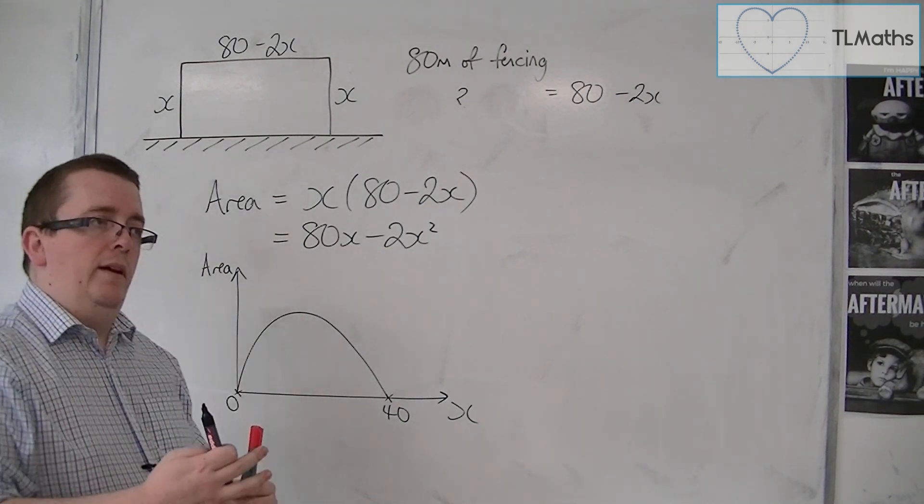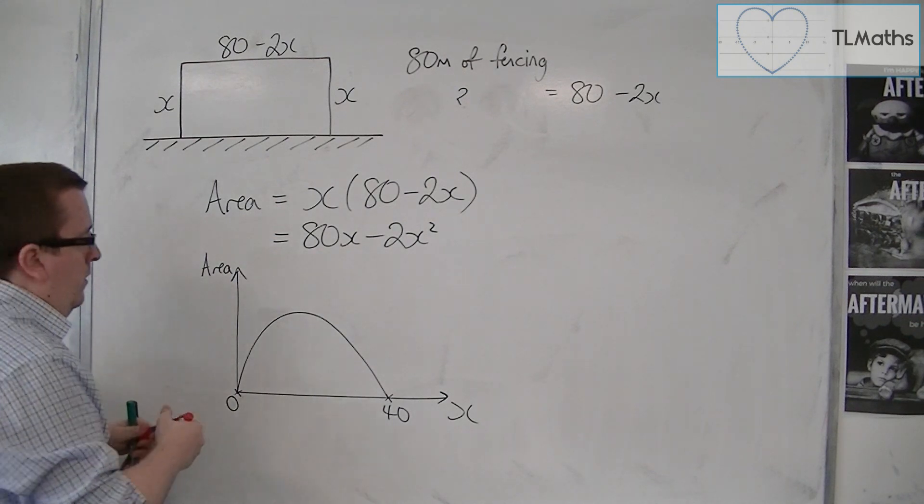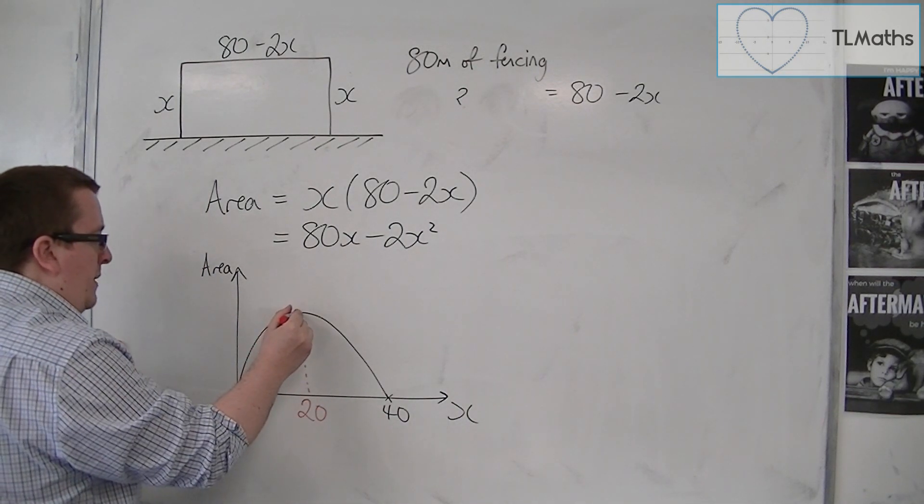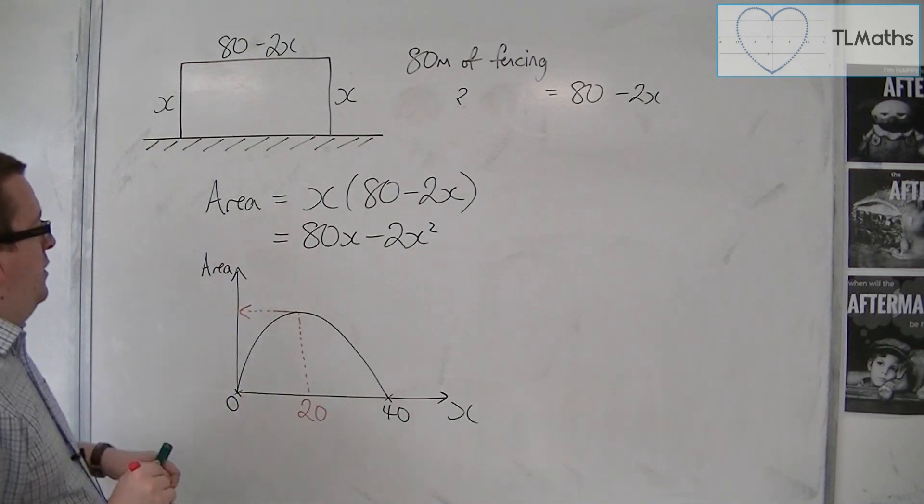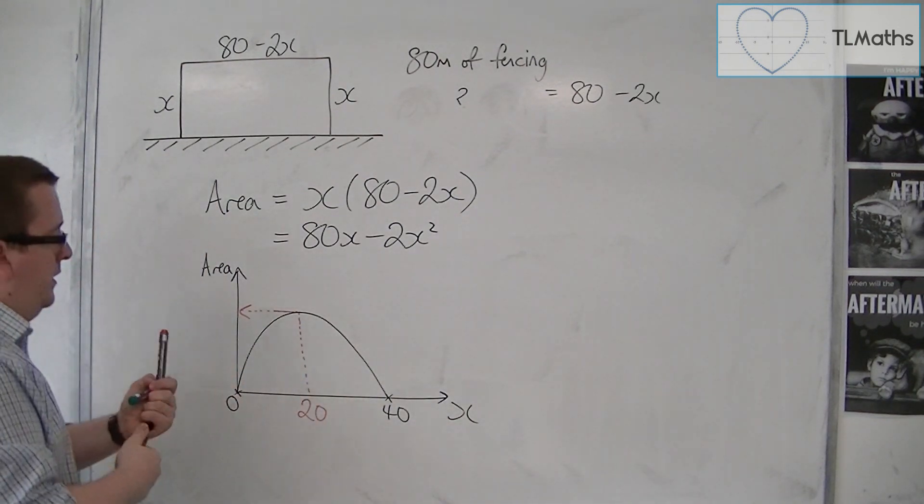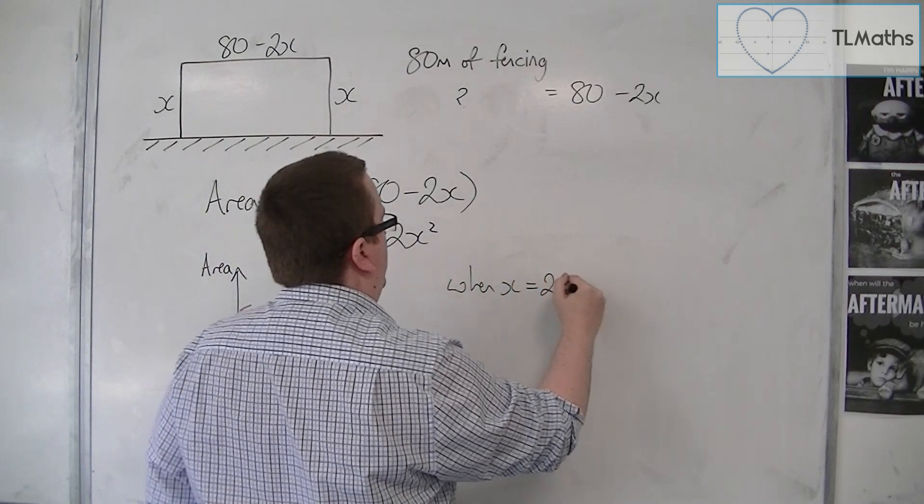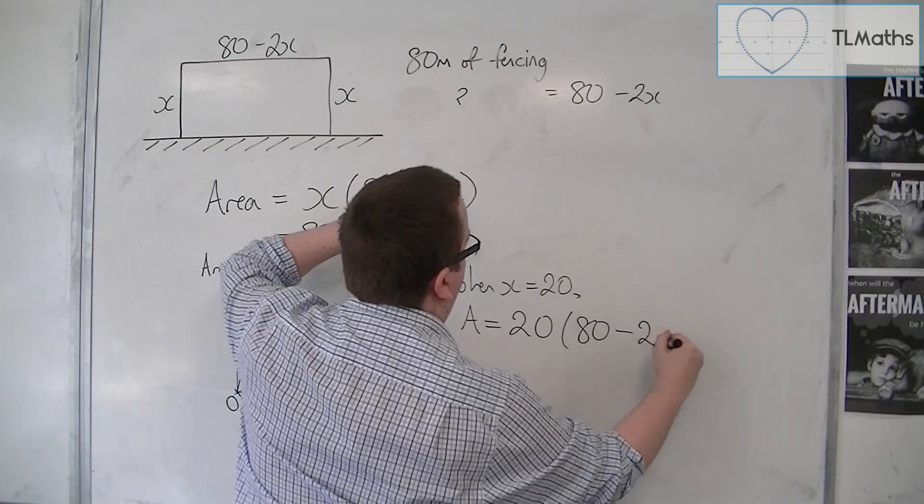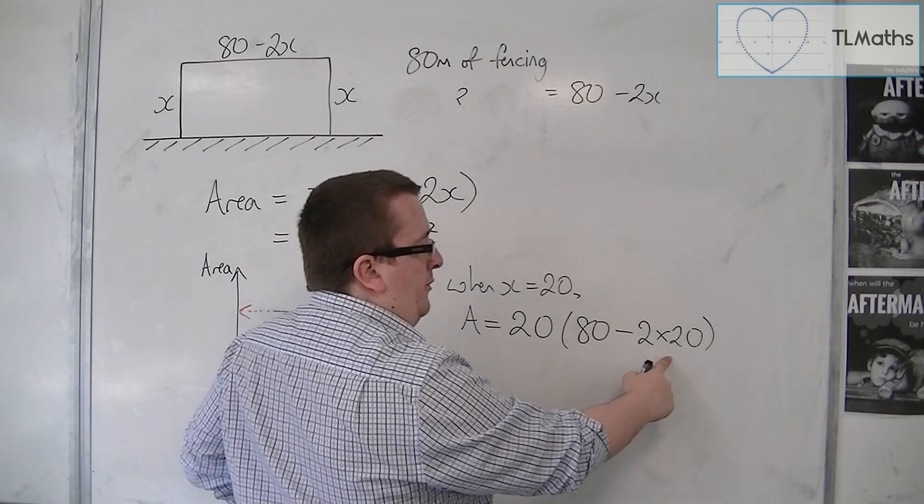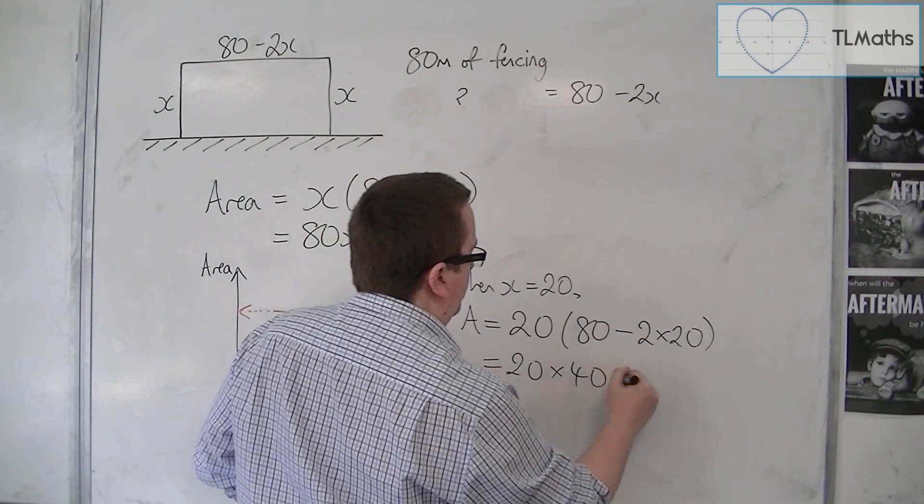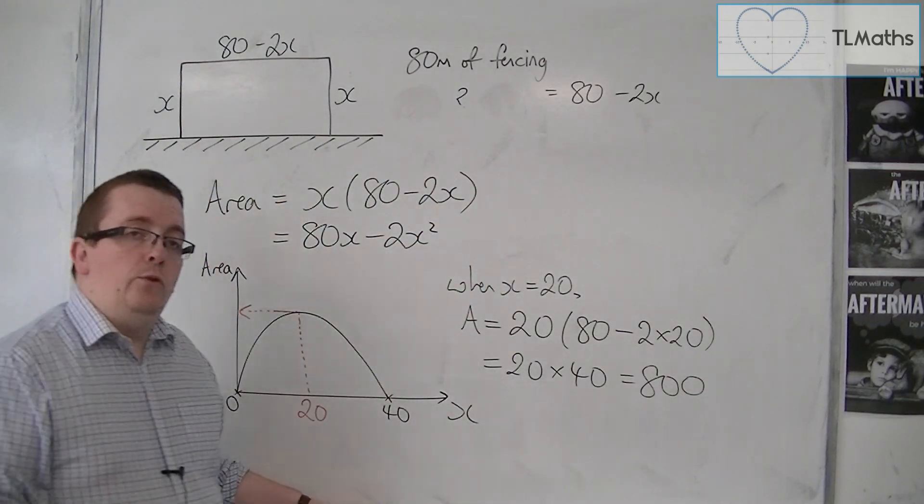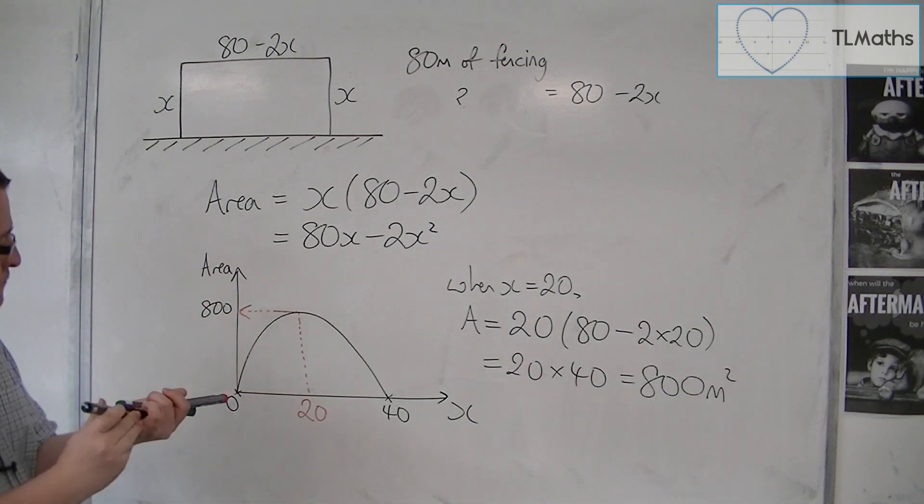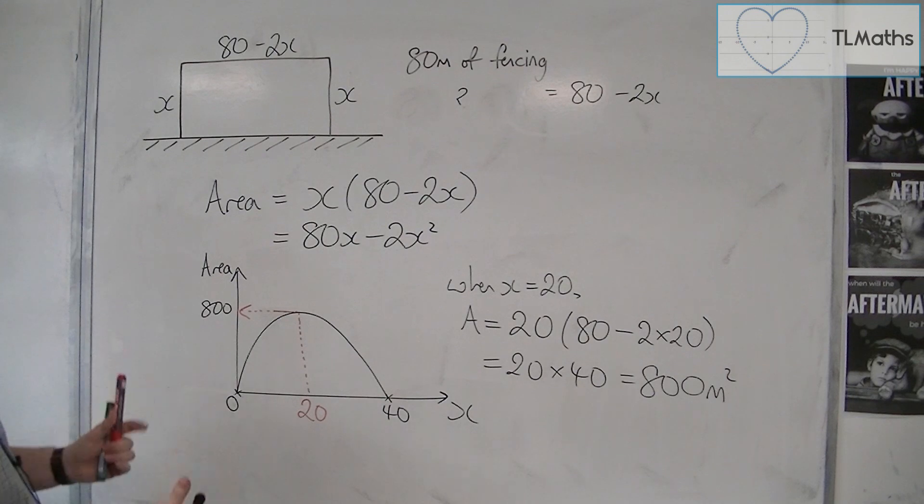Now we know that a parabola is symmetric, and so this point here halfway between 0 and 40, which is 20, must give me my largest possible area. So when x is 20, the area is equal to 20 times 80 minus 2 lots of 20. So 80 take away 2 lots of 20 is just 40. So 20 times 40, which is equal to 800. And so the maximum area is actually 800 square meters. So this is solving an optimization problem. And what we did was we drew a sketch of the curve, and we identified that as being the maximum point, and that is how we found the solution.